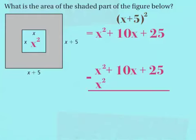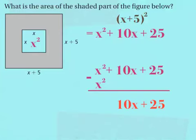Combining like terms, my only like terms are the x squared terms. x squared minus x squared cancels out, but I'm still left with 10x plus 25. So the area of the shaded part of the figure is 10x plus 25 units squared.